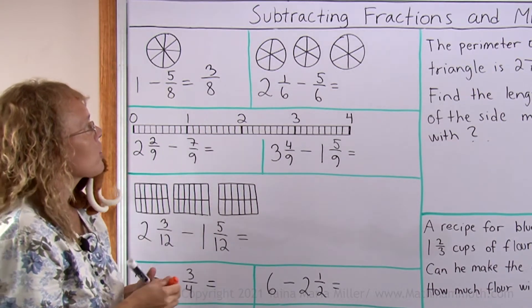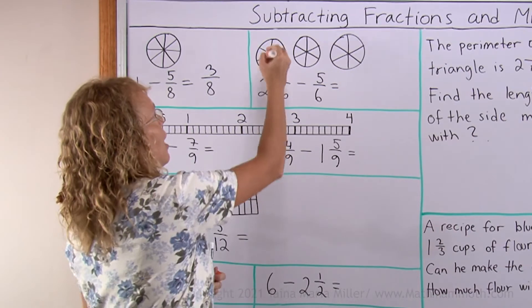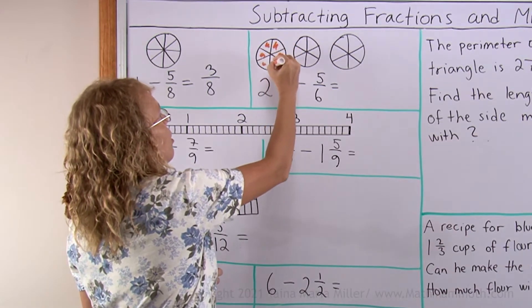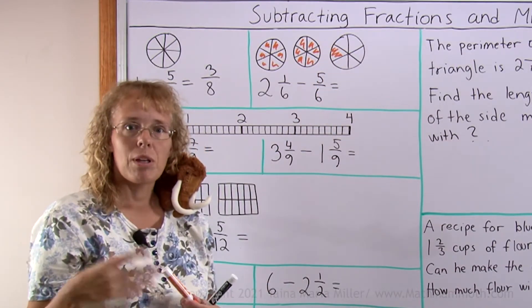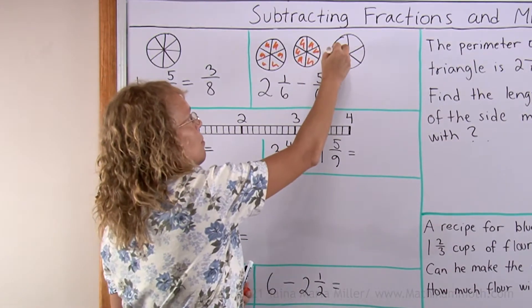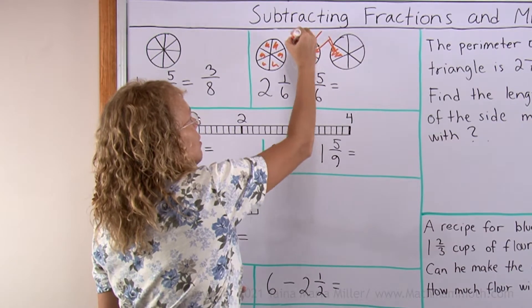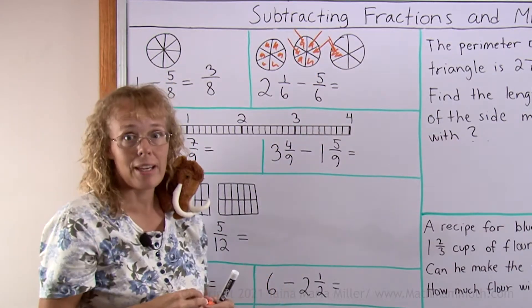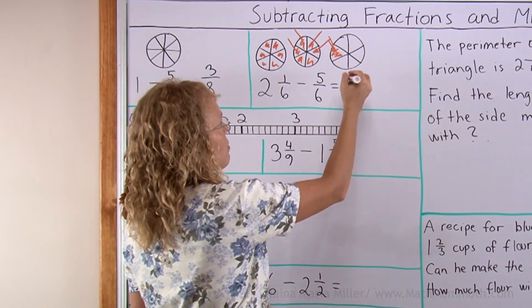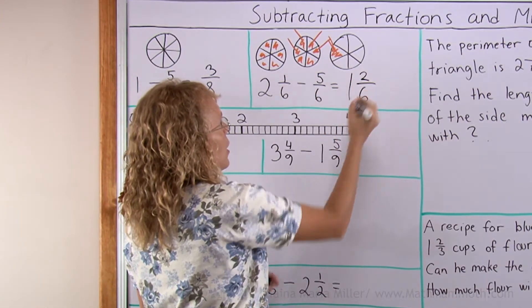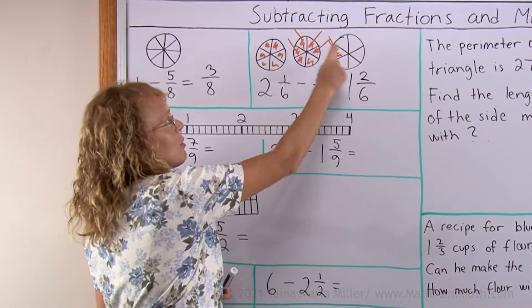Here let me color 2 and 1 sixth take away 5 sixths. I color this much — that's what I have initially: 2 whole pies, all these, and then from this pie 1 sixth. Then I take away 5 sixths: 1, 2, 3, 4 and 5 sixths are taken away. So now what is left is 1 whole pie and 2 sixths. Notice when I was taking them away I started from this piece, not from here or here but from this one.